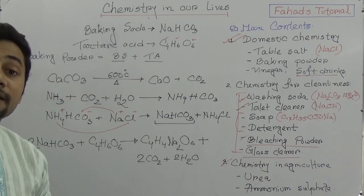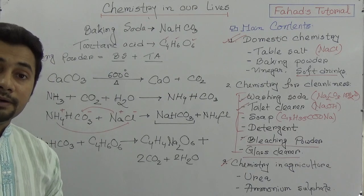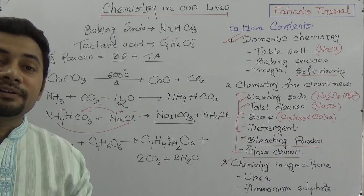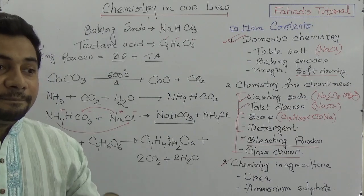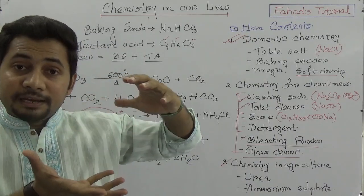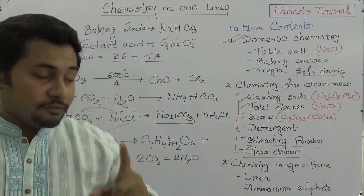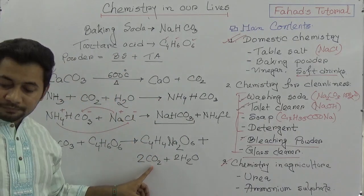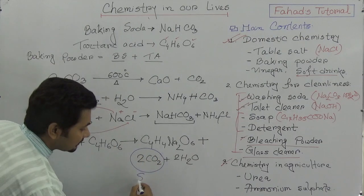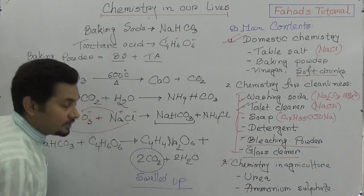Now the question can be: what is the function of baking powder, and why is it named baking powder? When baking powder is mixed with flour, the cake becomes swelled up — the height of the cake rises. This is because of the carbon dioxide produced. When baking powder and tartaric acid are mixed, this carbon dioxide is the main reason for the swelling up of the cake.